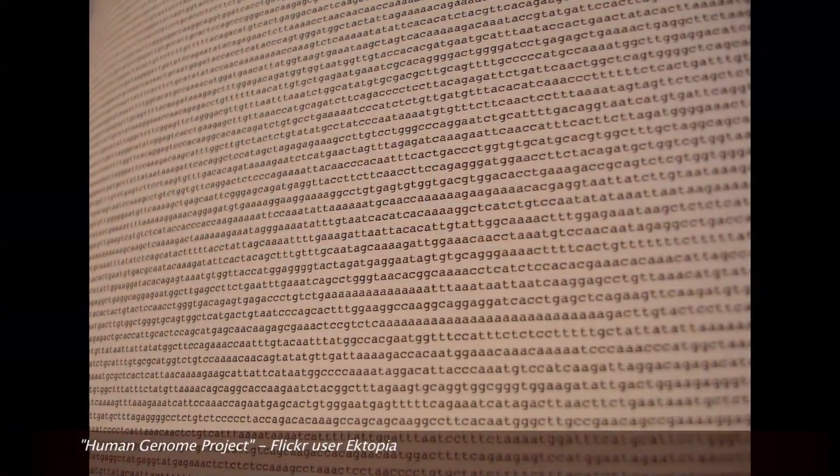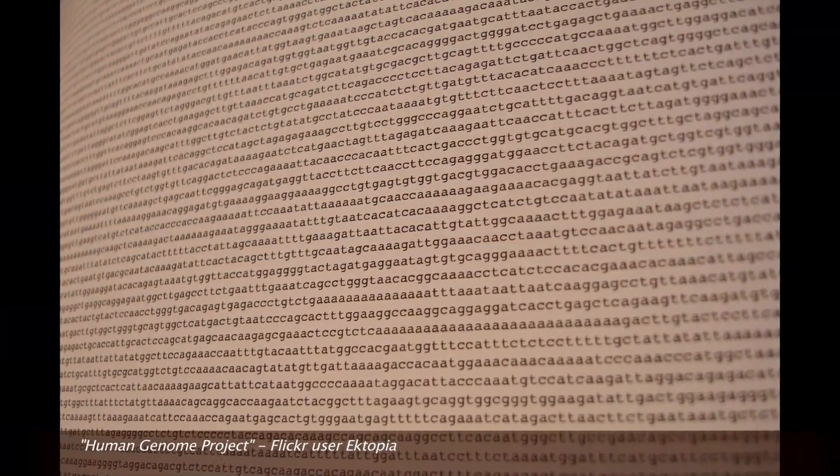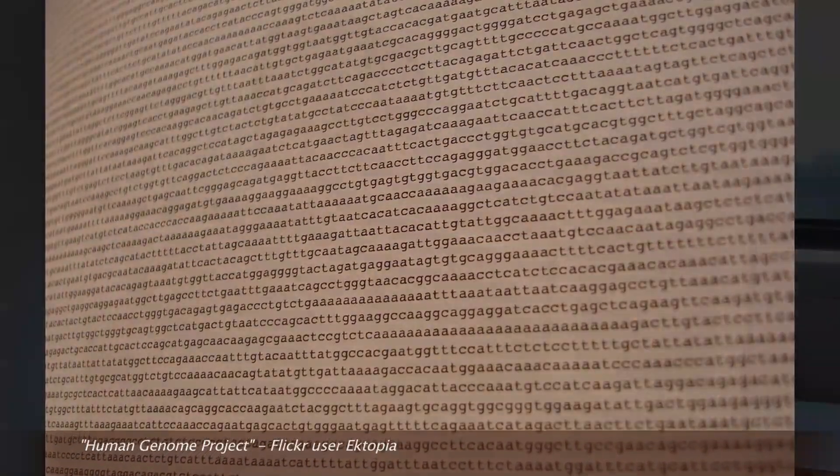The human genome is very big. It's about 3 billion base pairs long. You can think of it as a book with 3 billion letters in it. It records everything about how you're going to shape up as a human, essentially.